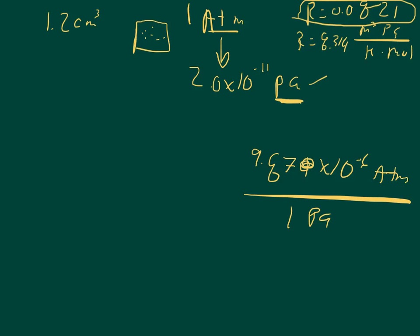And so we can just set up 2 times 10 to the negative 11th over 1, this is in pascals, the pascals cancel out, times 9.87 times 10 to the negative 6th. And so what we end up with is 1.974 times 10 to the negative 16th atmospheres.